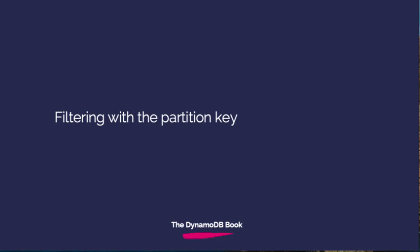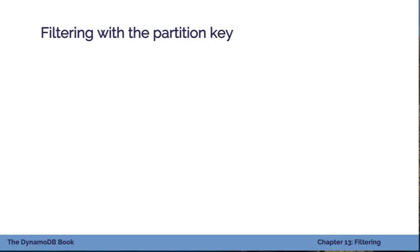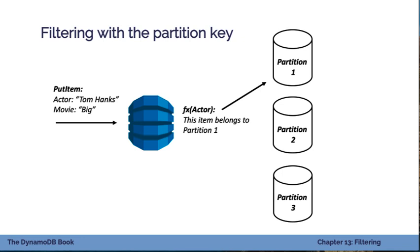The first and most important strategy is filtering with the partition key. You've already been doing this in previous chapters. Every time you make a request to DynamoDB, it hits the request router, hashes the partition key, and finds which partition the data is on. So if you have a table that's a terabyte, you're not searching across an entire terabyte — you're narrowing it down to a one gig, two gig, maybe 10 gig partition to find the data you want.